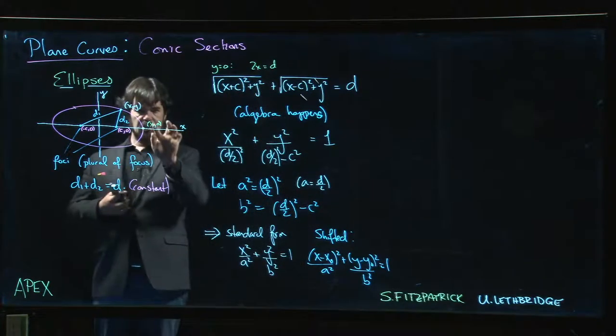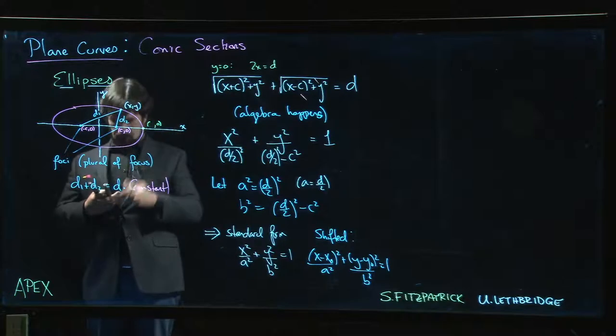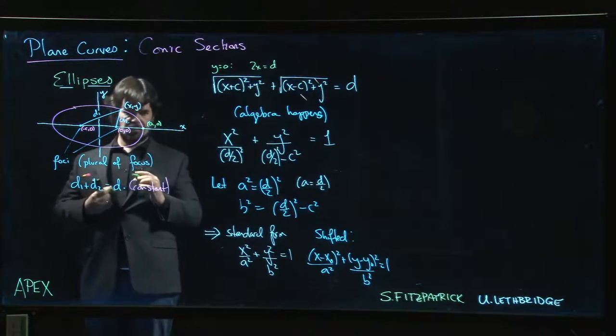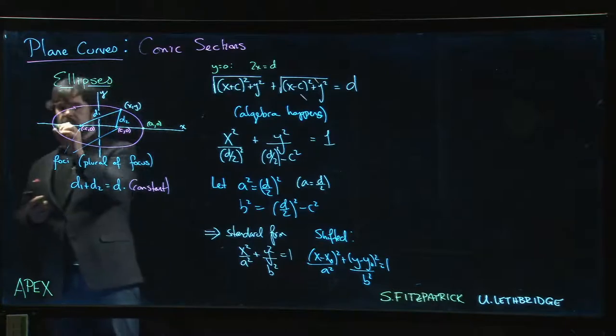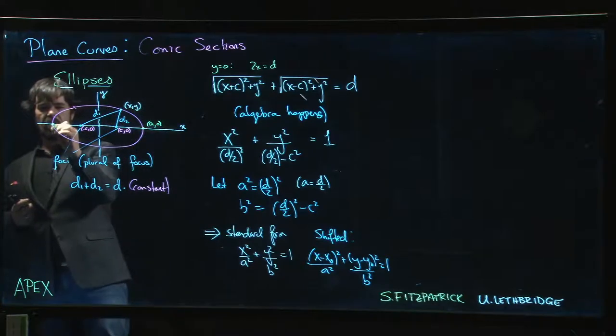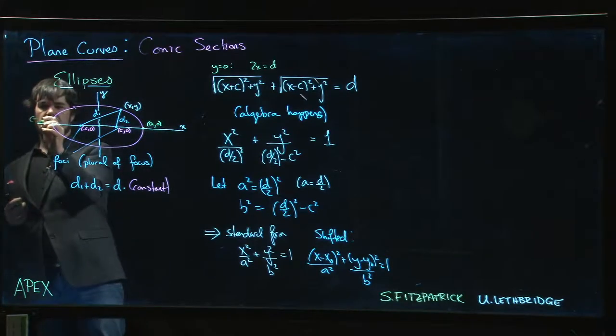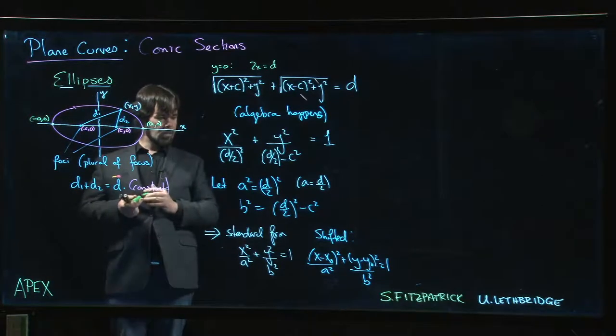So actually, we know now that this point here is (a, 0). And a similar argument is going to tell you that over here, this must be (-a, 0).